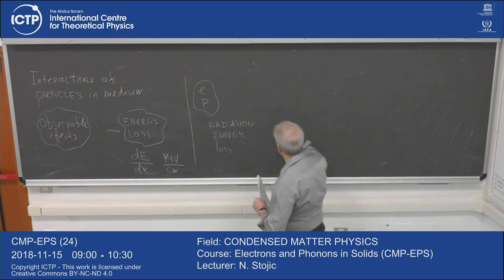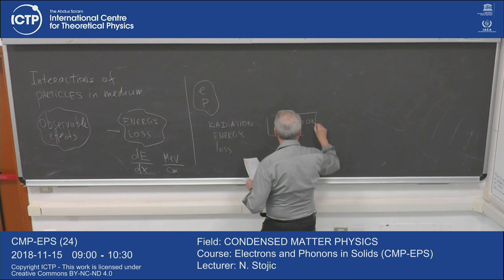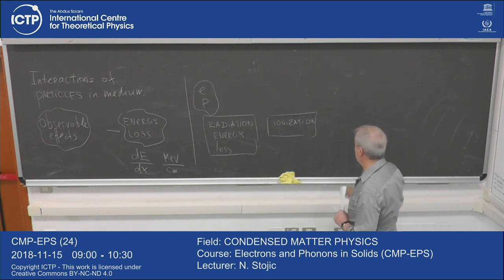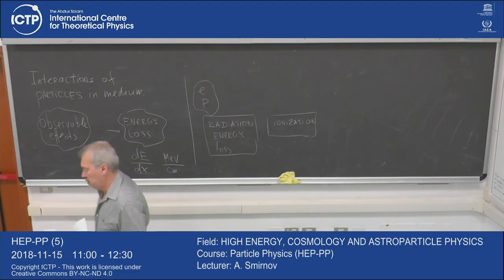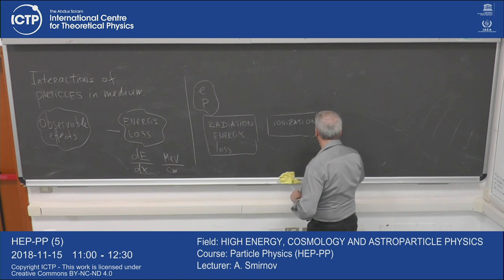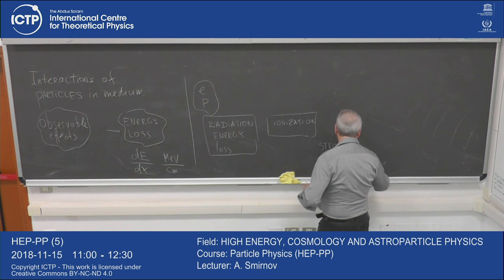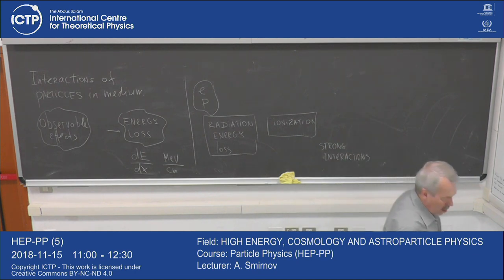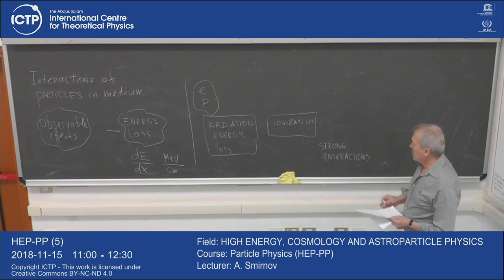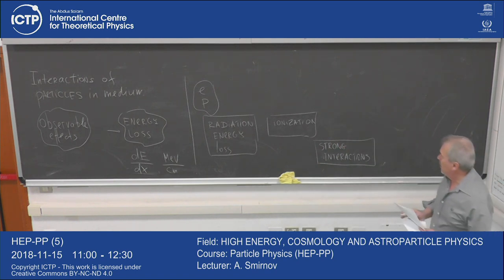Another important process is ionization. Of course you have some processes related to strong interactions — when your proton, for instance, interacts with nuclei and can be absorbed. But strong interactions are short-range interactions, and to a large extent those produced by electromagnetic interactions dominate. There is a process which is not dominant in terms of energy loss but extremely important for detection of particles, and this is Cherenkov radiation.